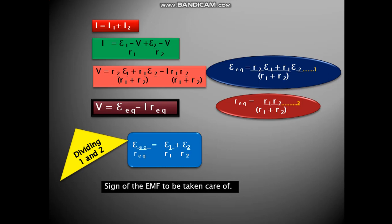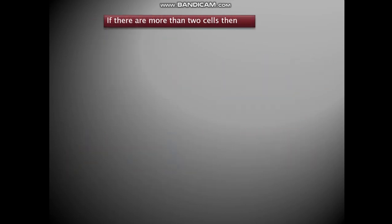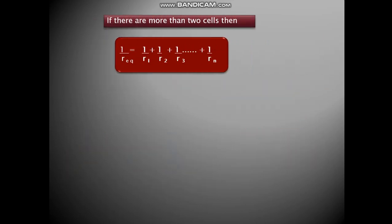Now the sign of the EMF has to be taken care of. That means if the cell is reversed, then it will become negative. 1 upon Requivalent can be written as 1 upon R1 plus 1 upon R2. So now instead of two cells, if you have more than two cells, then you have 1 upon Requivalent is 1 upon R1 plus 1 upon R2 up to 1 upon Rn. And similarly, Eequivalent upon Requivalent is E1 by R1 plus E2 by R2 plus E3 by R3 up to En upon Rn.